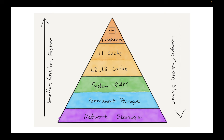This memory hierarchy chart is useful if you're asked to compare different storage media: smaller, costlier, and faster at the top; larger, cheaper, and slower at the bottom. The register is the smallest, costliest, and fastest. Then L1 cache, L2 and L3 cache, system RAM, permanent storage (hard drive), and network storage accessed over Ethernet or wireless.